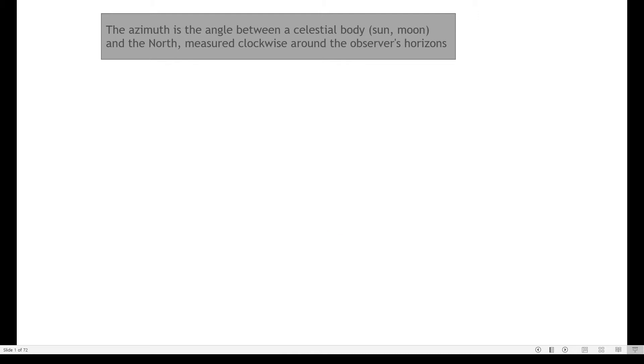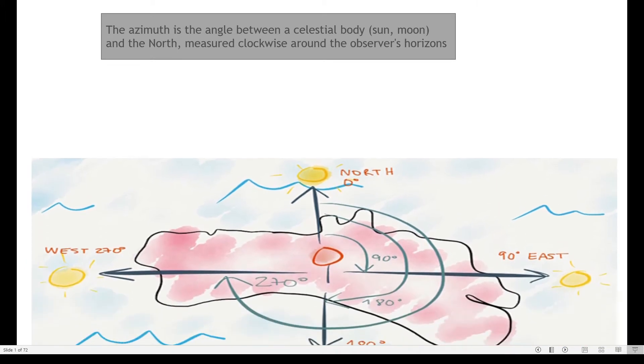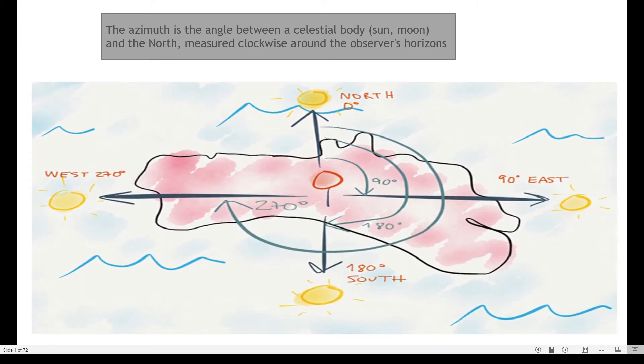Hi guys, today we're going to look at one of the very important topics: azimuth. So what's azimuth? Azimuth is the angle between the Sun or moon, any celestial body. Imagine this is the Sun or this is our home, the Sun, and we are standing here.